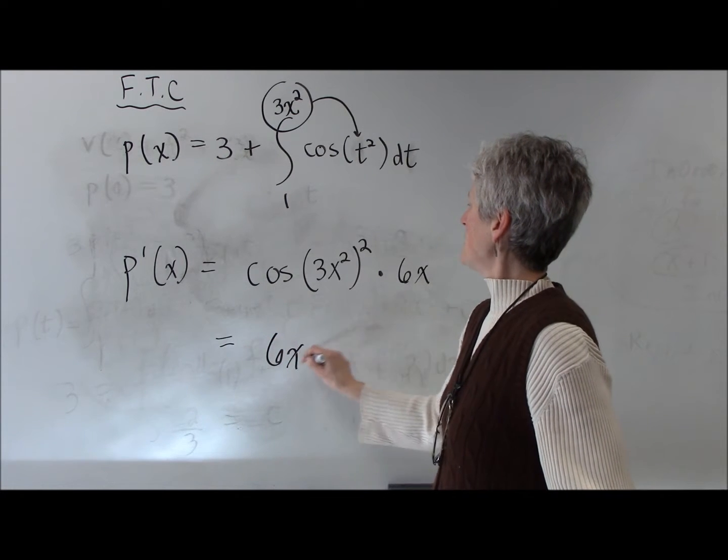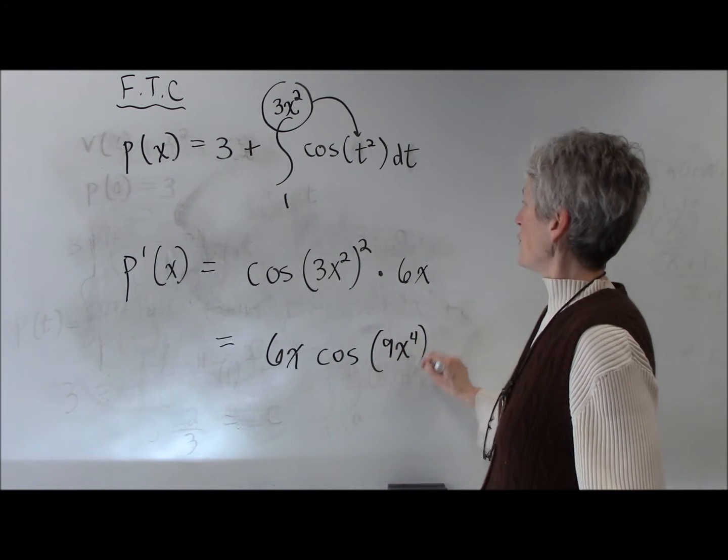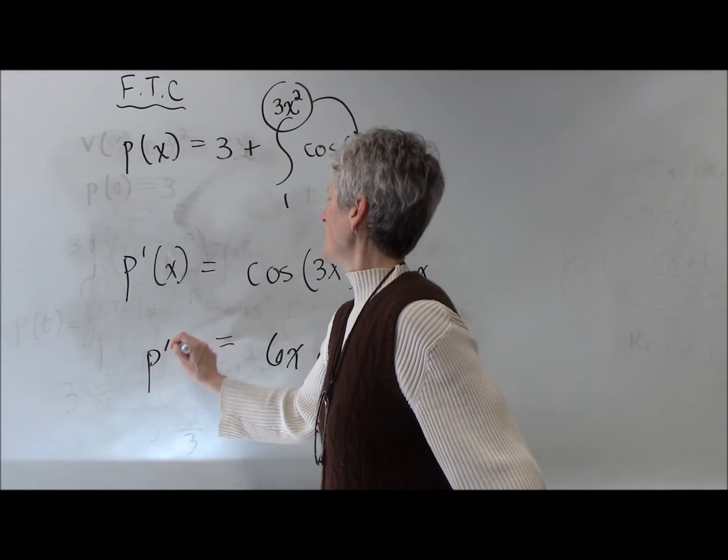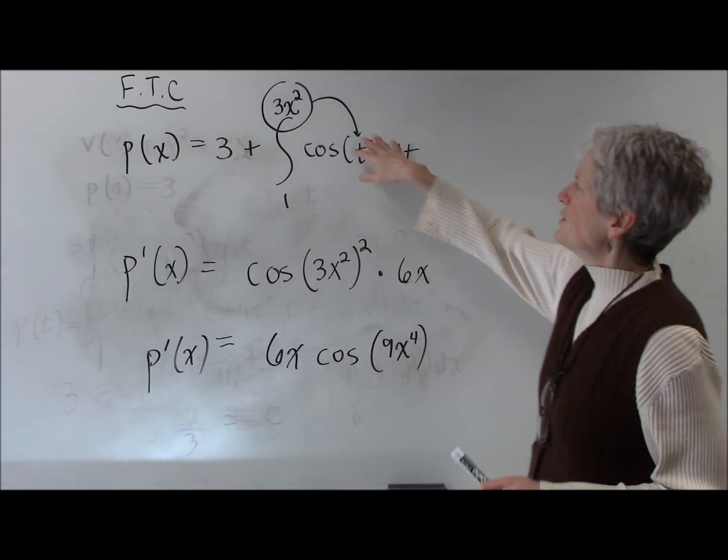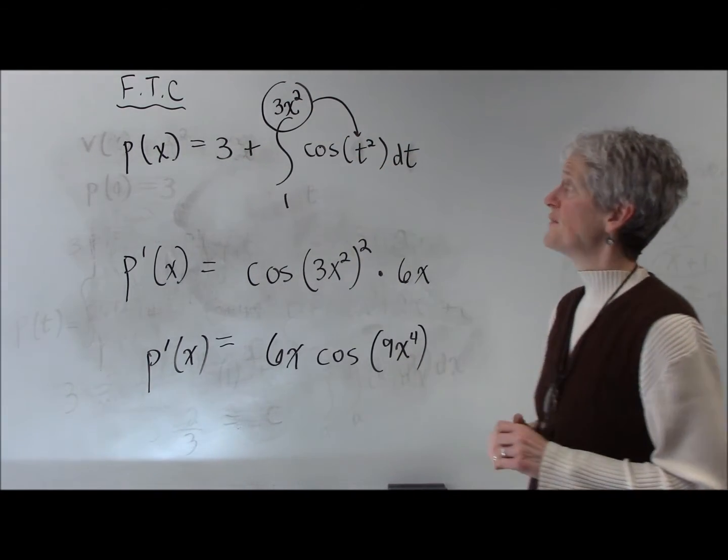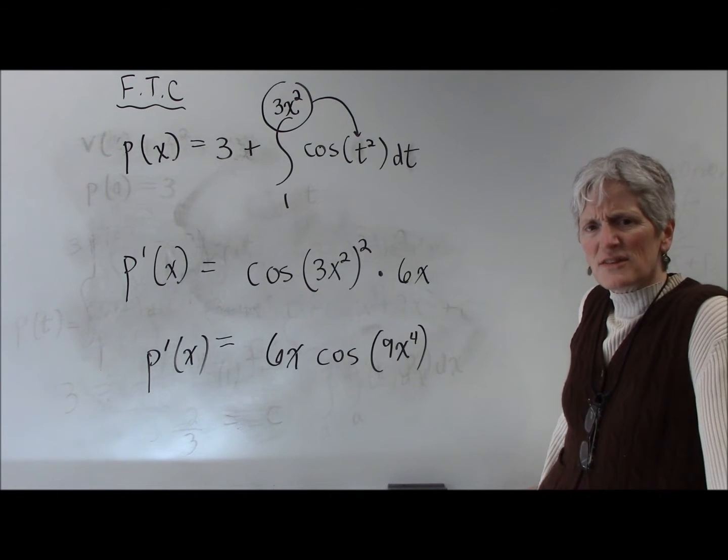And then I can bring that up front and just kind of clean that up: 6x times cosine of 9x to the 4th. That would be the derivative of that function. Don't worry too much about how I change the variables. That doesn't matter too much. But is this making sense?